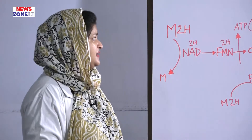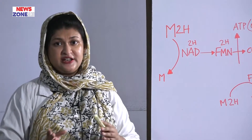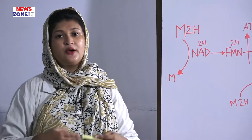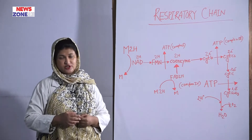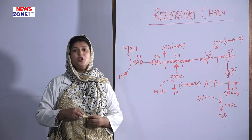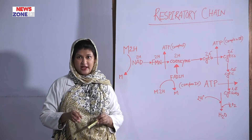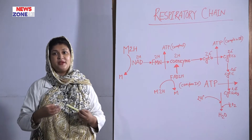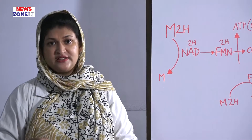In the respiratory chain, the reduced coenzymes NAD2H and FAD2H come from the oxidation of glucose, fatty acids, and amino acids by the process of dehydrogenation. Dehydrogenation means removal of hydrogen atoms from biomolecules, resulting in transfer of hydrogen atoms to NAD or FAD to generate NADH and FADH2, which are the main reducing equivalents.